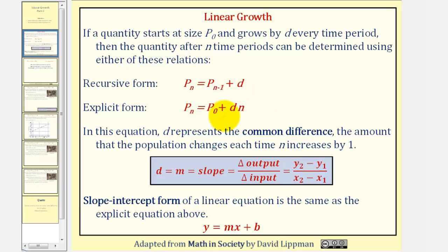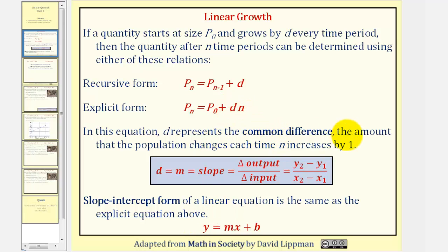The explicit form is the same as the slope-intercept form of a line, y equals mx plus b, where p sub zero would be b, the y-intercept; d, the common difference, would be the same as the slope m; and p sub n is the same as the output, or the y value. In this equation, d represents the common difference — the amount the population changes each time n increases by one.